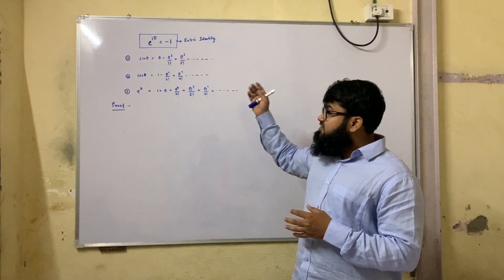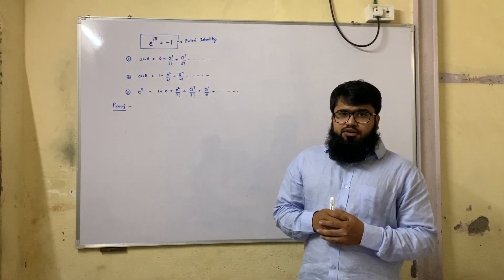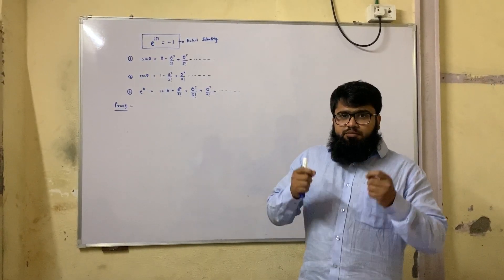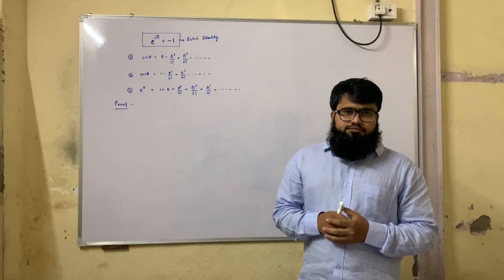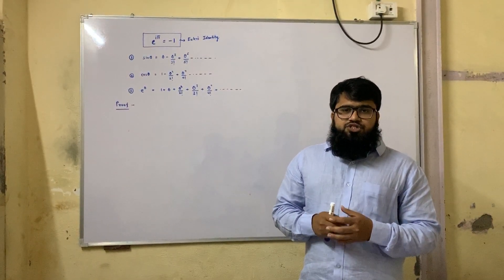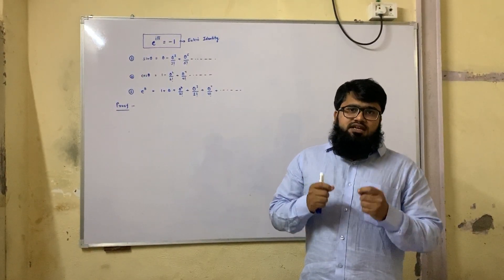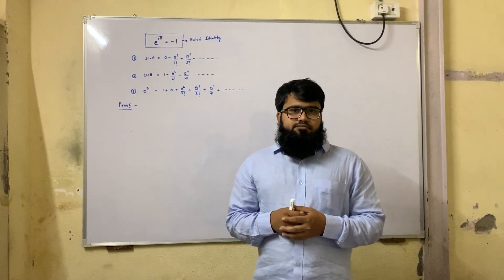In order to prove this identity, first we will prove Euler's formula, which is cos theta plus i sin theta equals e to the power i theta.